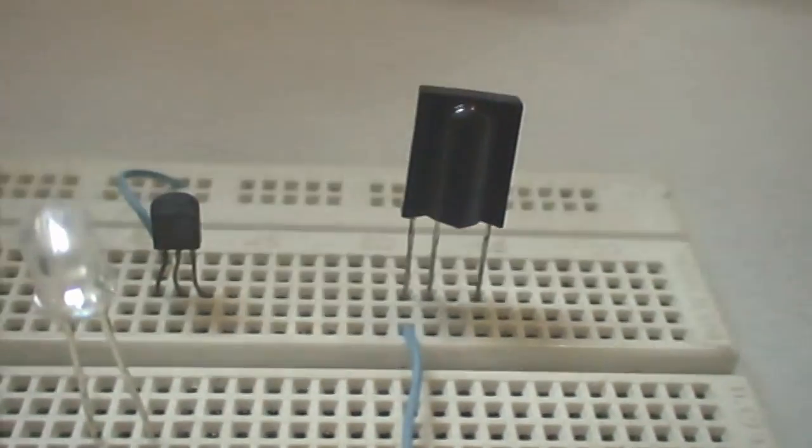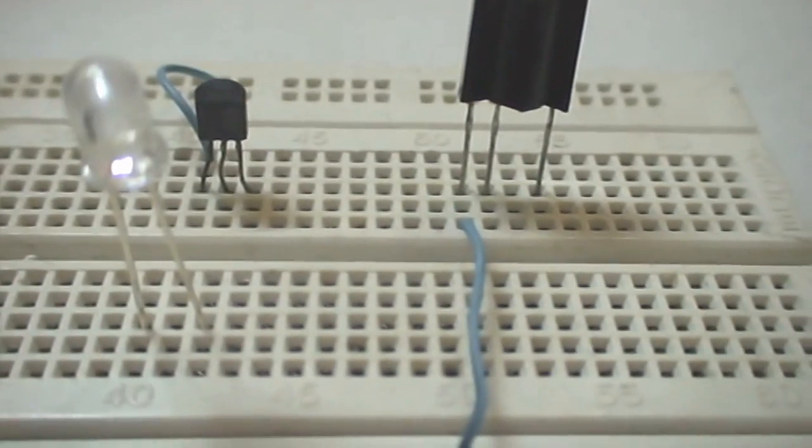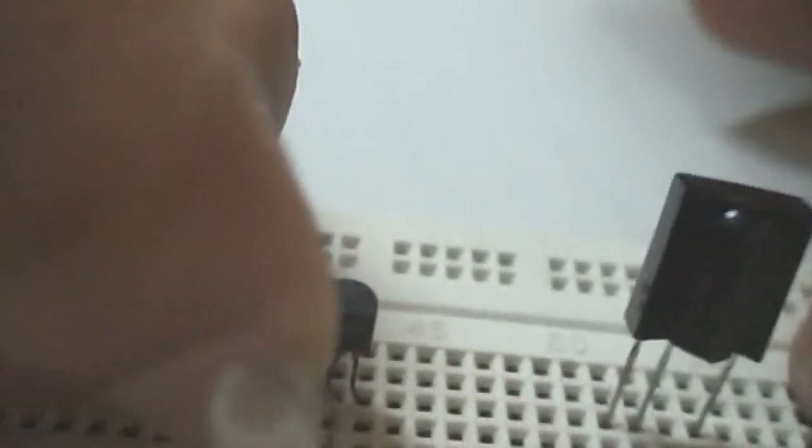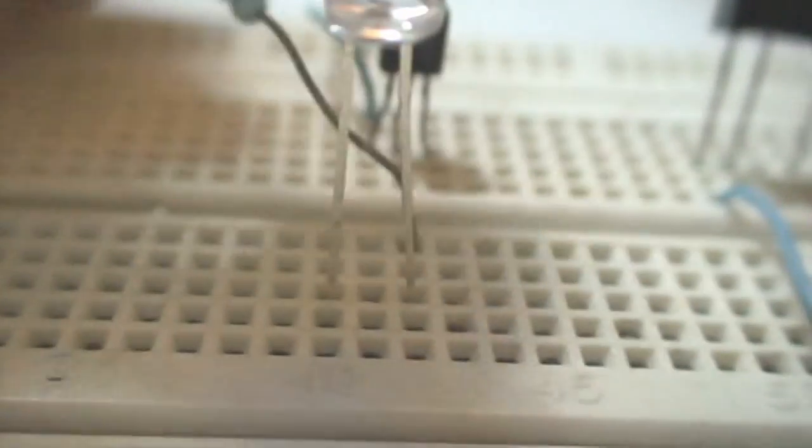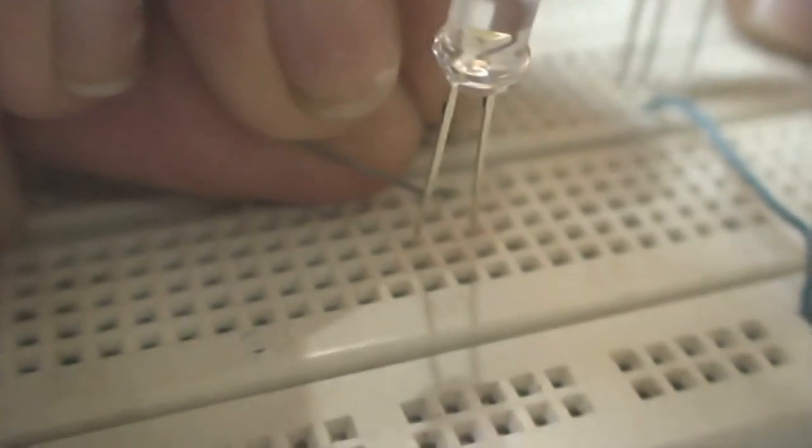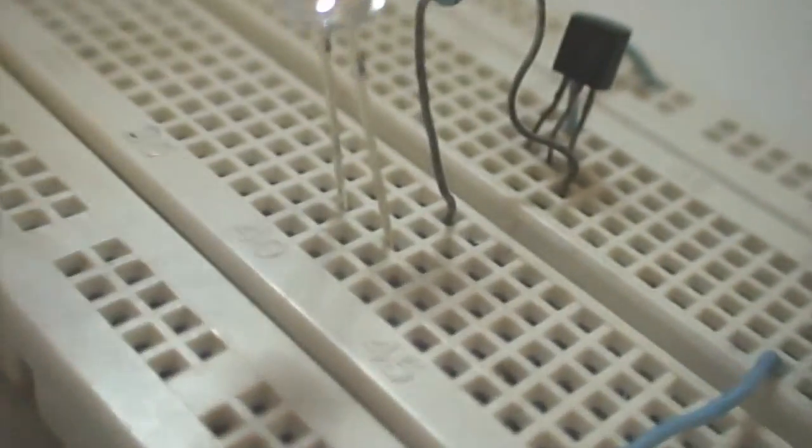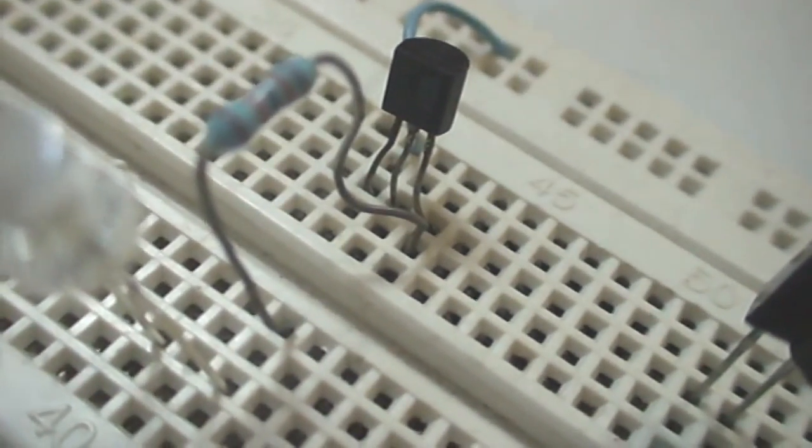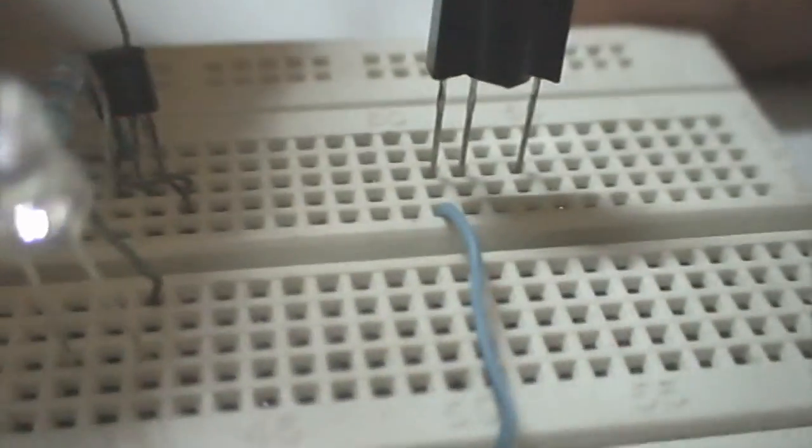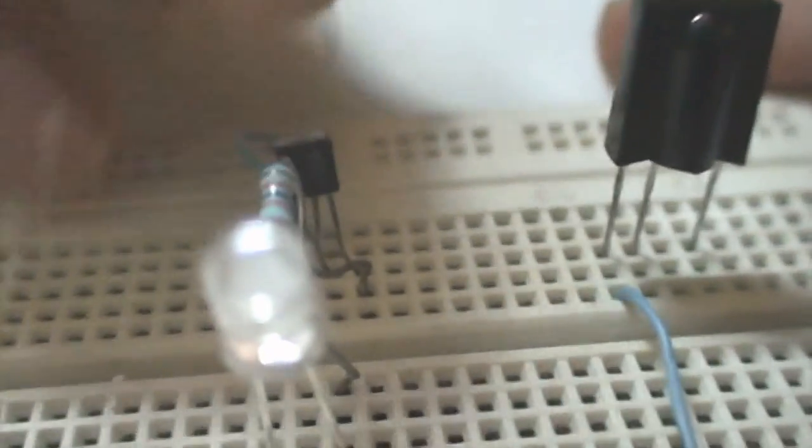We connect the collector of the 557 Transistor to the anode of the LED. We connect the base of the 557 Transistor to the output of TSOP1738.